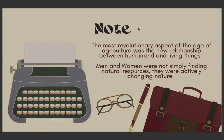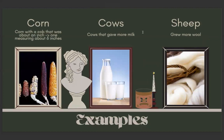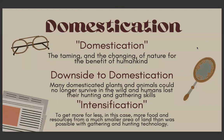Keep in mind, the most revolutionary aspect of the age of agriculture was a new relationship between humankind and living things. Men and women were not simply finding natural resources — they were actively changing nature. For example, corn was once a cob that was about just an inch, and later in the years it became one measuring about six inches. Cows gave more milk and sheep grew more wool. Domestication refers to the taming and changing of nature for the benefit of humankind. Some downsides to domestication were that many domesticated plants and animals could no longer survive in the wild, and humans lost their hunting and gathering skills. Intensification means to get more for less — in this case, more food and resources from a much smaller area of land than was possible with gathering and hunting technology.